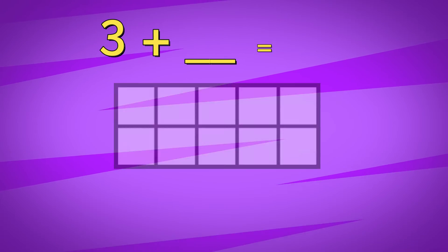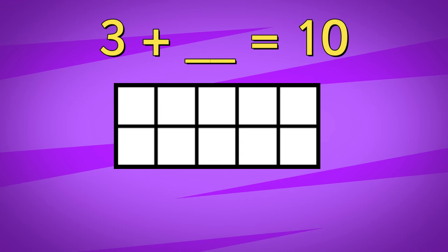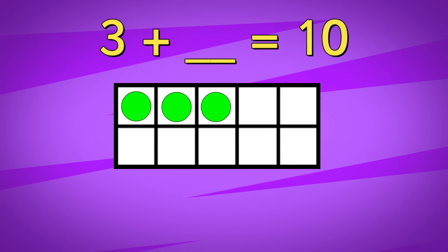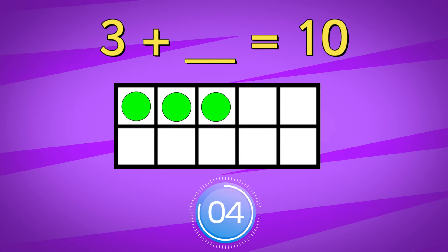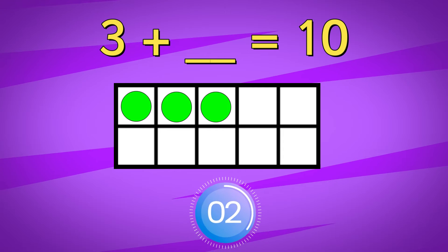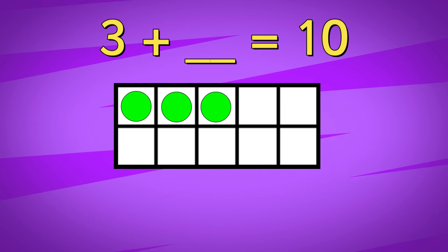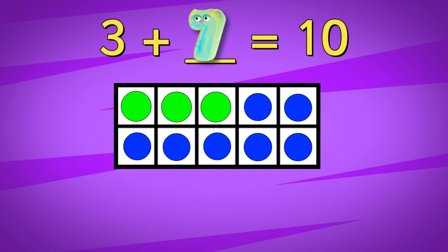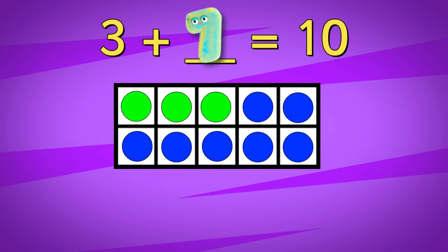3 add something equals 10. The answer is 7.